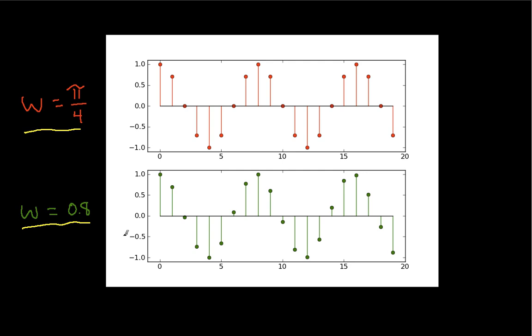But you'll notice something interesting happens in the plots. In the top plot, my values actually repeat every 8 samples. So every 8 samples, I get the same value. In my bottom plot, you'll notice that the values are similar to each other, but they don't actually repeat. You can see that most easily if you look at this point here. 8 samples later, it's like this. So it's not exactly the same. And 8 samples later, it's like this.